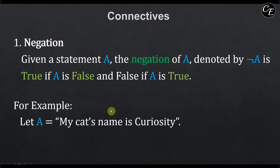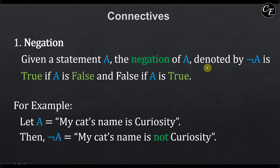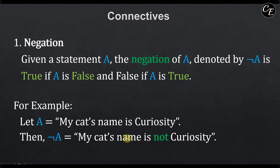For an English example, let's say you have statement a: 'my cat's name is curiosity.' Then not-a, applying the negation connective, will be 'my cat's name is not curiosity.' It inverses the truth value of a. So if a is true — that is, my cat's name is indeed curiosity — then not-a will be false: it is false to say my cat's name is not curiosity. Or if a is false — my cat's name is not curiosity — then not-a will become true: it is true that my cat's name is not curiosity. So not-a simply inverses the truth value of a.